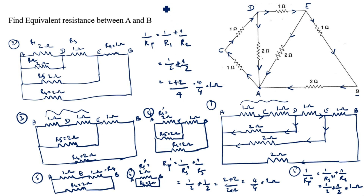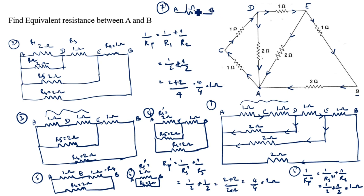Final step — the equivalent resistance between A and B is 1 ohm. Thanks for watching this video.